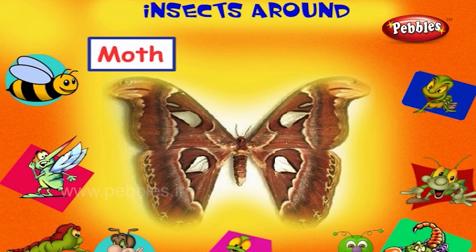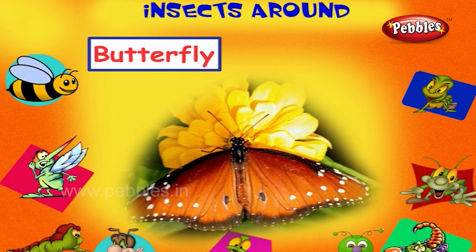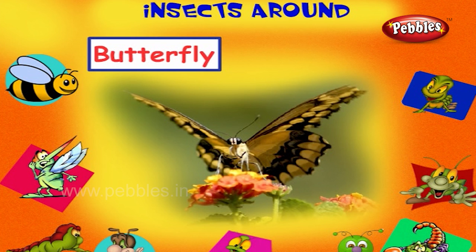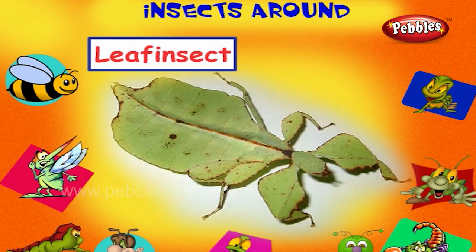This is a butterfly. It is beautifully coloured. It sucks nectar from the flowers. This is a leaf insect. It looks like a leaf and so it escapes from the prey.